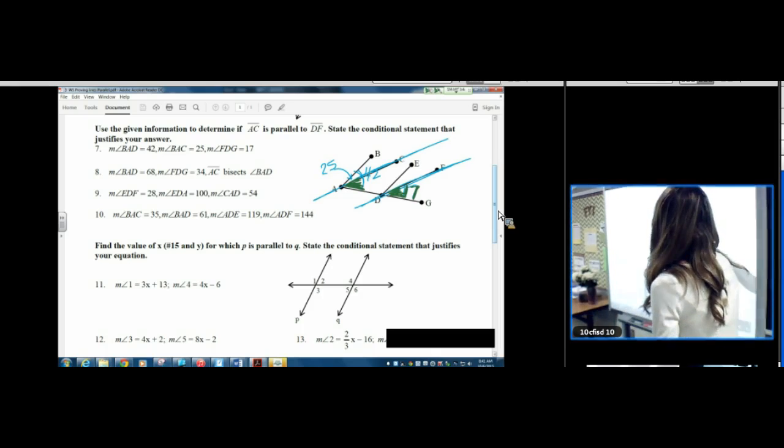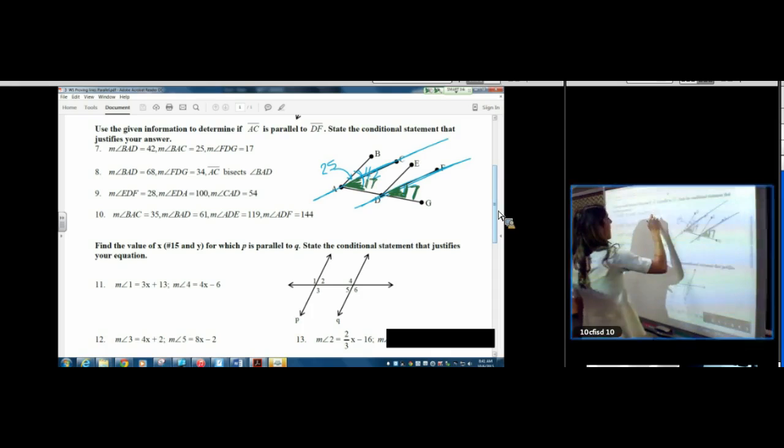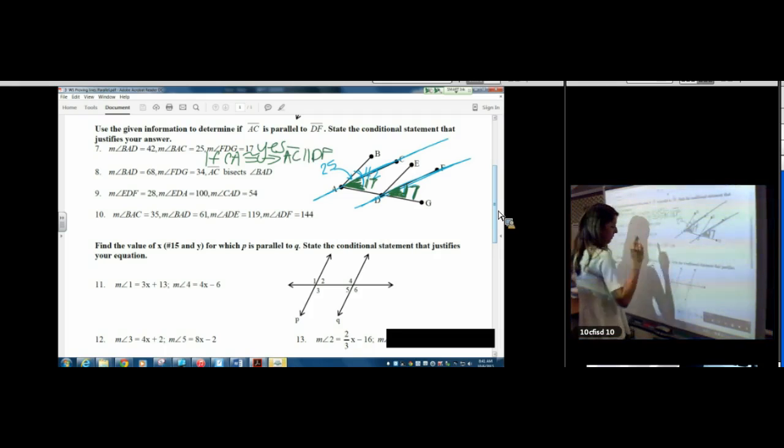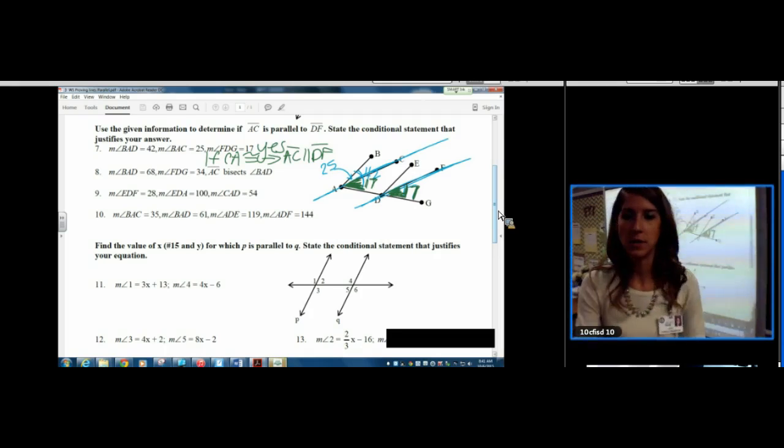So we do 42 minus 25. 17. Ding ding ding. So since this one is 17 as well, we would say yes, and then we would do if corresponding angles are congruent, then AC is parallel to DF. That's the theorem we're using.